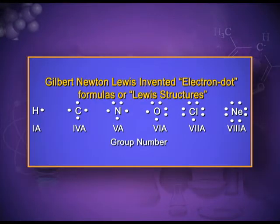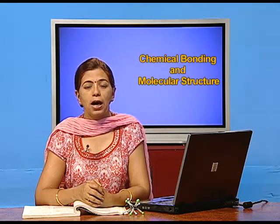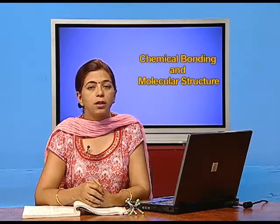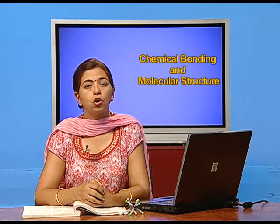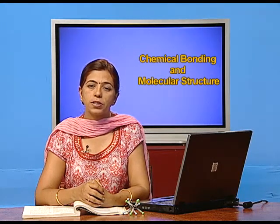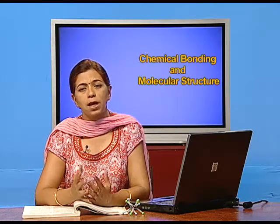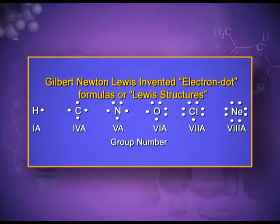First group elements have only one electron in their valence shell, so we write the symbol of the element and put one dot — one dot means one electron. Similarly, the second group has two valence electrons, so we write the symbol of the element, for example beryllium, and show two dots. For oxygen, the atomic number is 8, so it has six electrons in its valence shell, and we put six dots around the oxygen symbol.